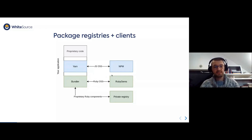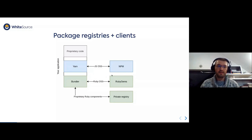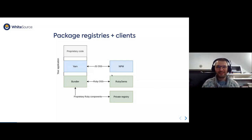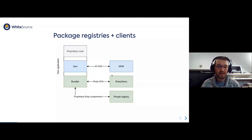Similarly, it's like that with Bundler and RubyGems. Sometimes you may use your own proprietary Ruby components from your own private registries. You can use only private registries if you want or if you need. Package registry clients are supposed to figure everything out within the context of your application — dependencies may have their own dependencies, which we call transitive dependencies, and they can have their own dependencies and so on.